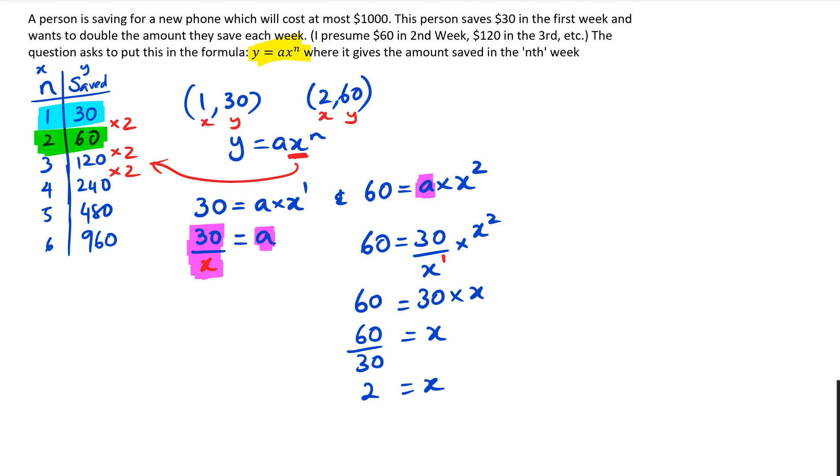Then our equation, we still need to figure out what the a value is. Because we've actually done this, that's why it kind of helps, because now we can actually say a is equal to 30 divided by x, which means we can write it as a is 30 divided by 2, and then a is equal to 15. So therefore we can actually say the equation is y equals 15 times 2 to the power of n, where it actually gives the amount saved in the nth week.